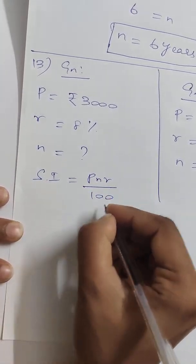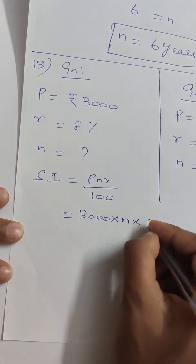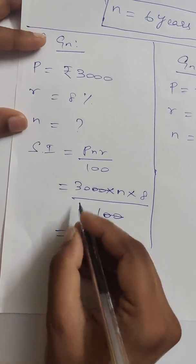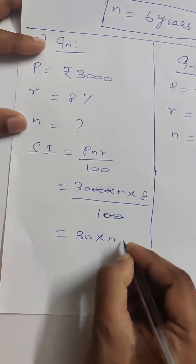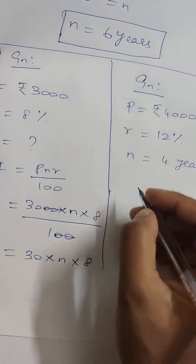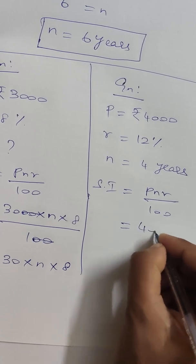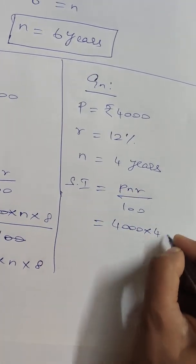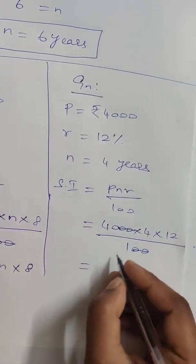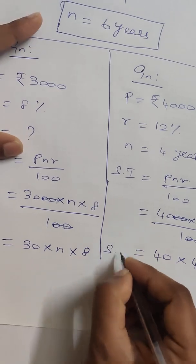Using SI = PNR/100: for the first case, P is 3,000, N is unknown, R is 8 by 100. For the second case, P is 4,000, R is 12 by 100, N is 4 years. Simplifying: first gives 30 into N into 8, second gives 40 into 4 into 12.